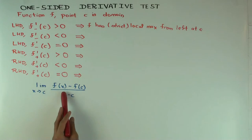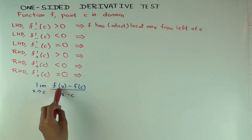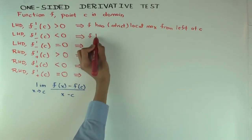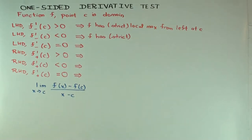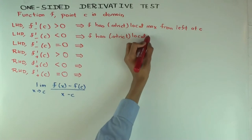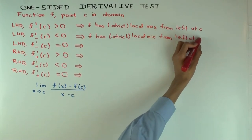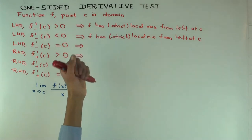We are not claiming that f is increasing on the left of c, because we are only comparing f(c) with points to its left — not comparing those left-side points with each other. If the left-hand derivative is less than zero, you get a strict local minimum from the left. You can think of it like a decreasing function, but there are examples where it's not actually decreasing. And if the left-hand derivative equals zero, it's completely inconclusive — it could be a local max, local min, or neither.